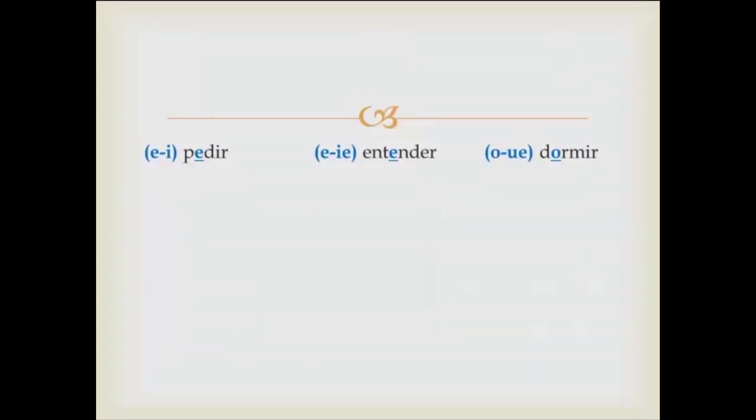I'm going to give you three more verbs: pedir, entender, and dormir. One is an e to i, one is an e to ie, and one is an o to ue. I'm going to give you 30 seconds, and I want you to conjugate each one of these three verbs. Go ahead and take a second and conjugate those three verbs on a separate sheet of paper right now, and in about 30 seconds I'll put up the correct conjugations for you, and you can check those against what you wrote down.